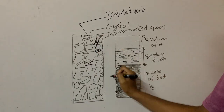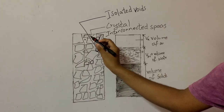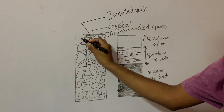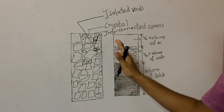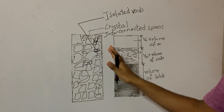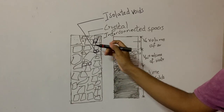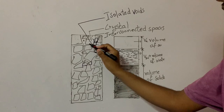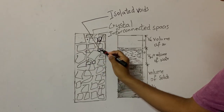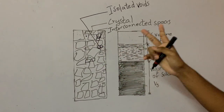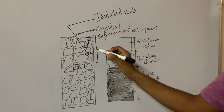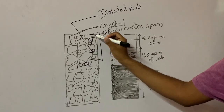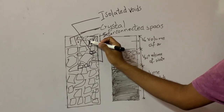Now you can see this picture. This picture represents a rock, and these are the crystals present within the rock. Usually a rock is made up of crystals or some other building materials, and these are the spaces present between those crystals. You can see these spaces — this one, this one, and this one. There is a major difference between these spaces. Now there are two types of interspaces present between these crystals.